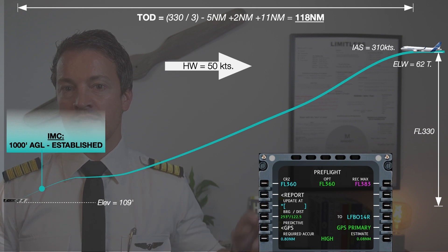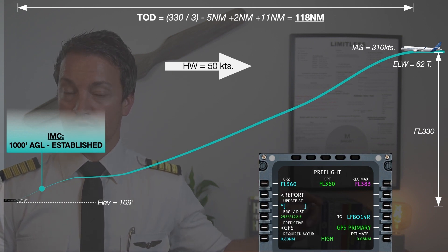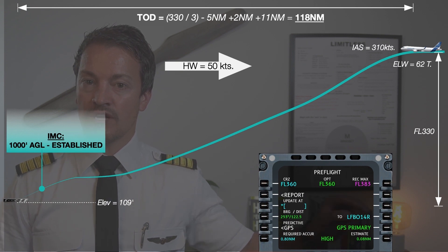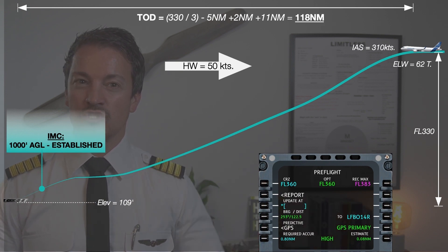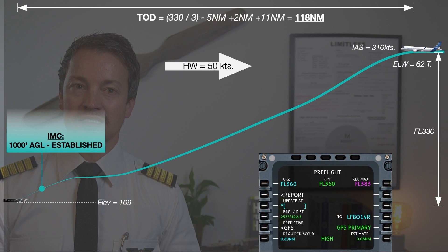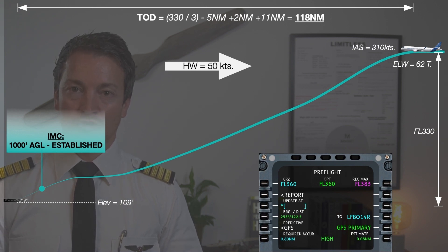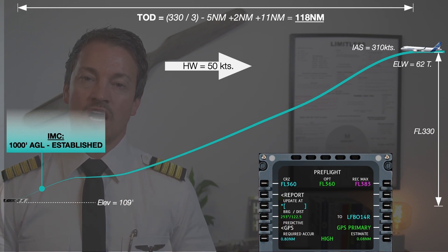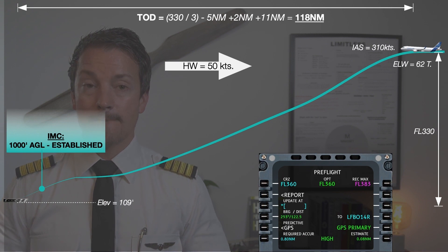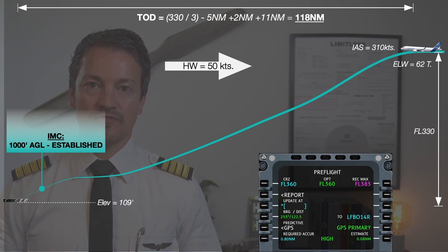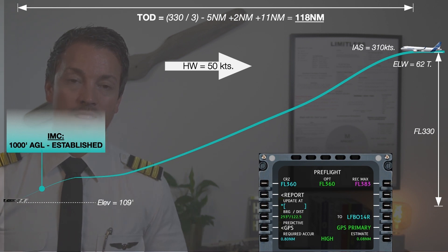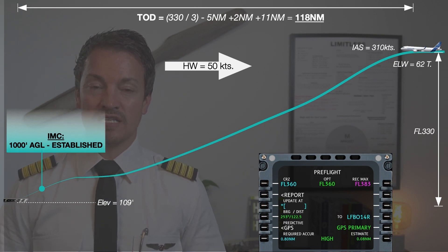If I then look at my progress page and the bearing distance to the threshold shows 122.5 nautical miles actual track miles to go, then I can see I don't need to start my descent just yet. I should be doing so when this hits 118 nautical miles. Providing everything stays perfect, I will be able to descend with the engines in idle all the way down with a 3-degree descent path.